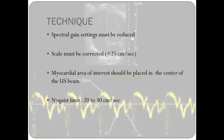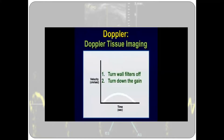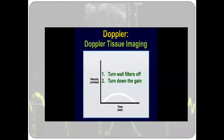What's the technique used here? The spectral gain setting must be reduced, scale must be corrected, and the myocardial area of interest must be placed in the center of the ultrasound beam. Nyquist limit should be set to 20 to 30 centimeters per second. In conventional Doppler, the wall filters are turned off — you need to turn wall filter off and turn down the gain for tissue Doppler imaging.